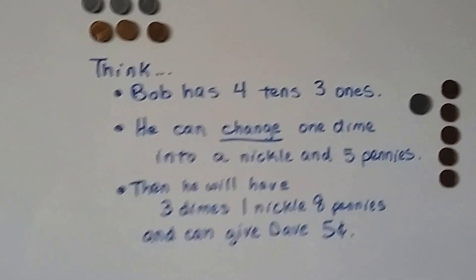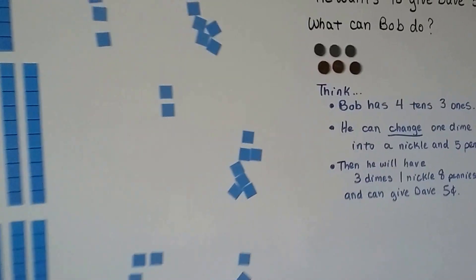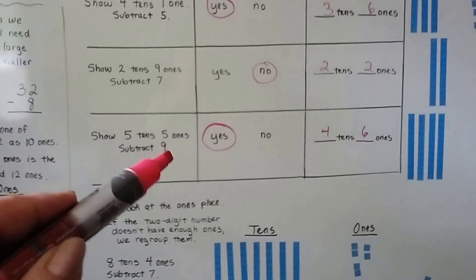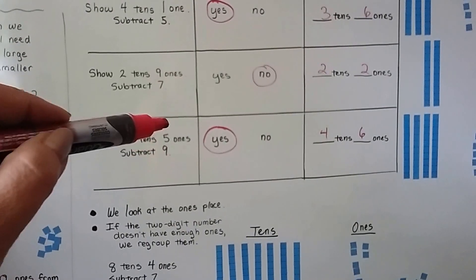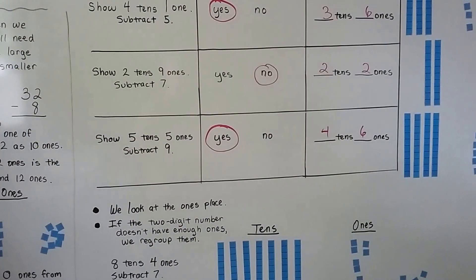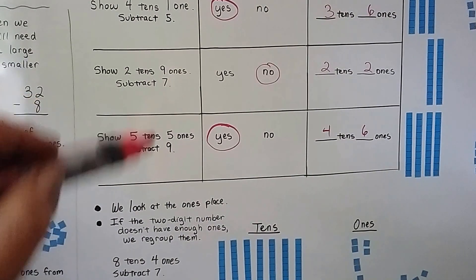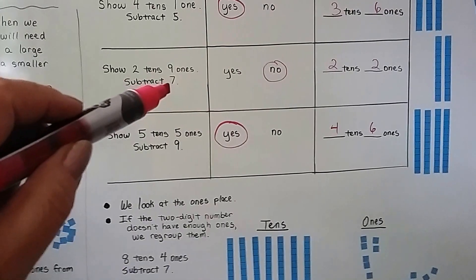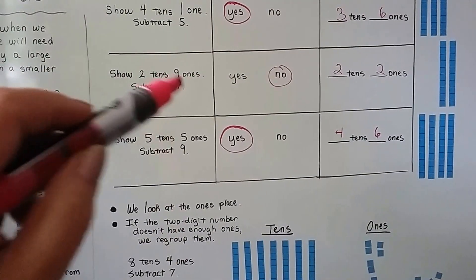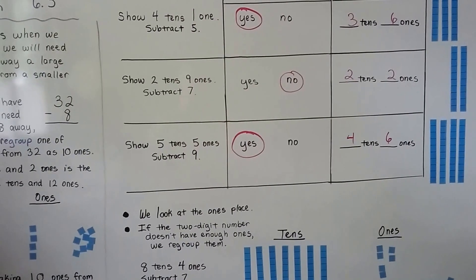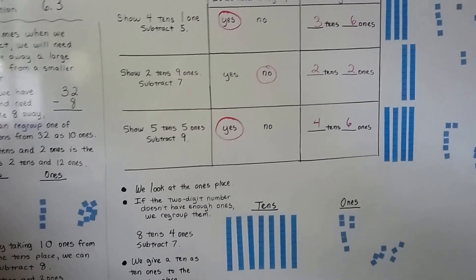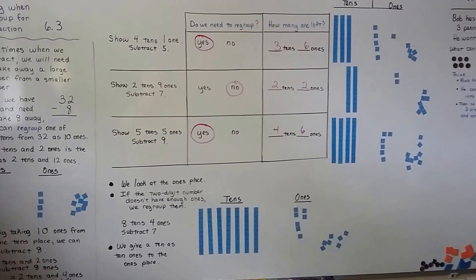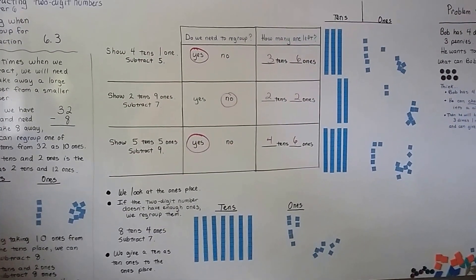So that's deciding when to regroup for subtraction. When you're trying to subtract ones where the number is larger than the minuend's ones, then yes, we need to regroup. If you're trying to subtract a number that's smaller, we don't need to regroup — we just subtract it. We're going to talk about regrouping from the tens place more and subtracting, so I'll see you next video. Bye!